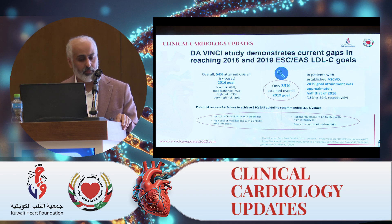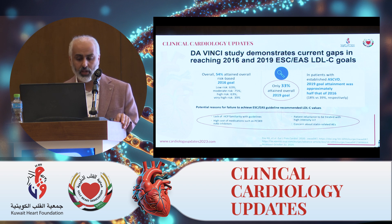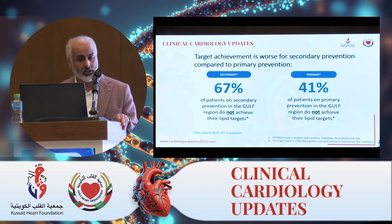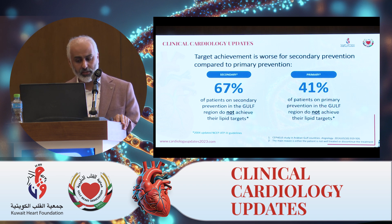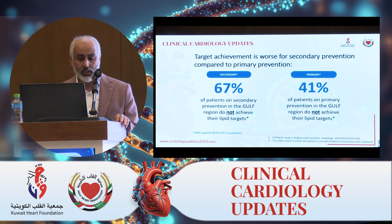The main reasons for this are: non-compliance of the patient — related to patient resistance or reluctance to take high-intensity statins and concern about adverse events — the lack of healthcare staff familiarity with the guidelines, and the high cost of PCSK9 inhibitor injectable therapy. Looking at secondary prevention, the target achievement is even worse. In the CVS study in Arabian Gulf countries, 40% of primary prevention patients achieved their target. For secondary prevention, 67% did not achieve their target — so less than 40% achieved their guideline-directed target.